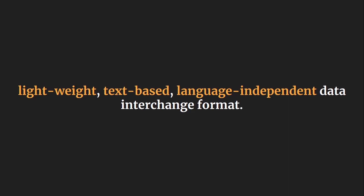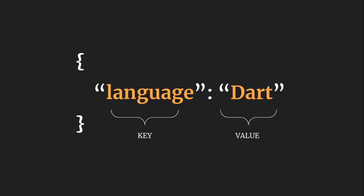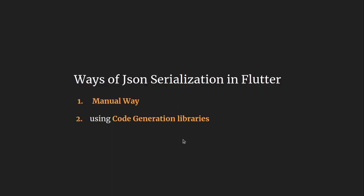To remind you, it looks like this. Here, 'language' is called a key and 'Dart' is called a value. So JSON is basically a key-value structure that represents your data. Now, can you tell me how JSON serialization is done in Flutter?